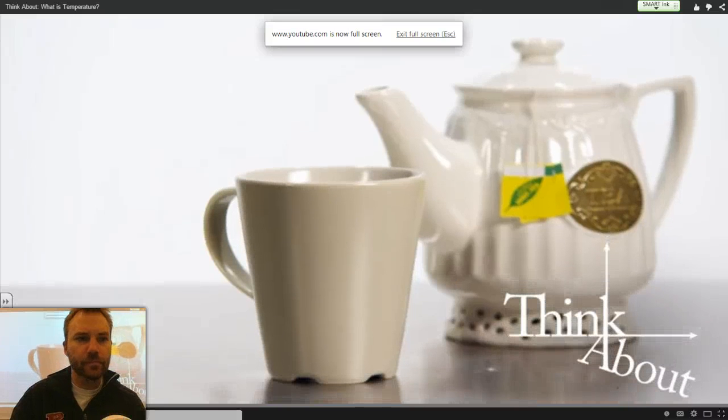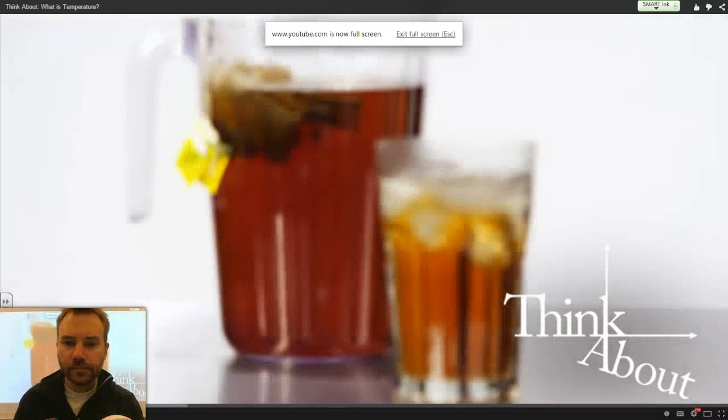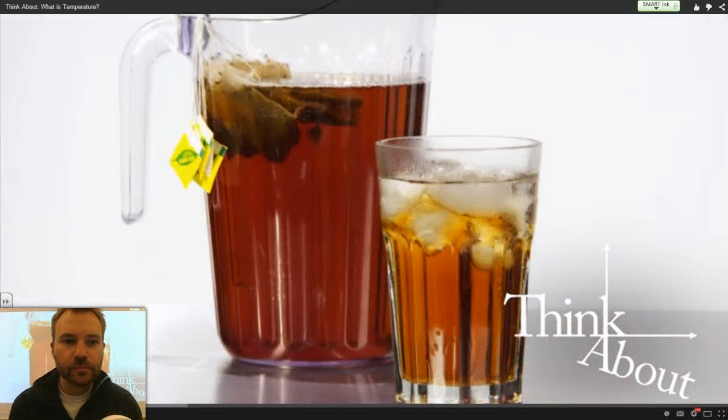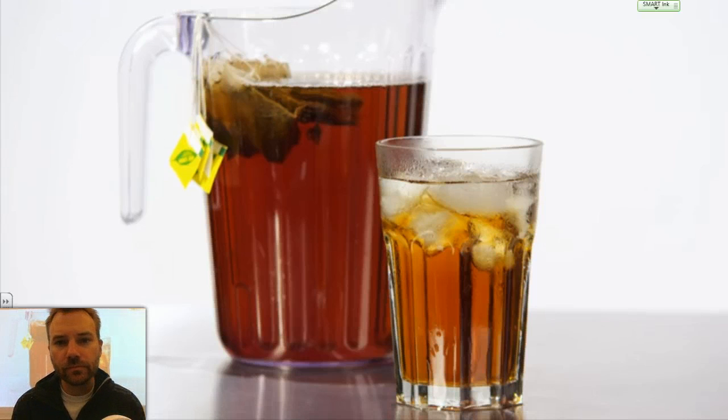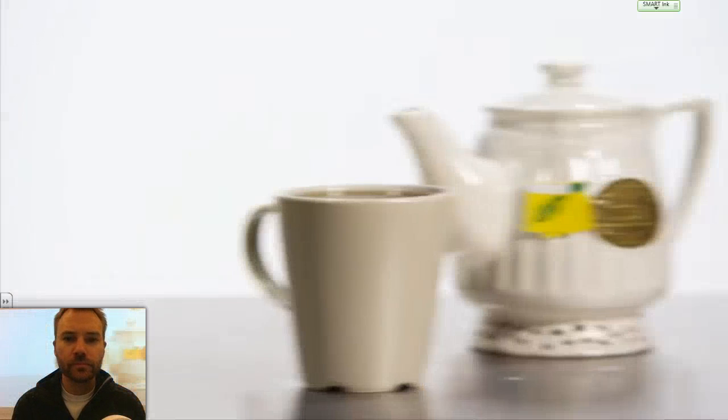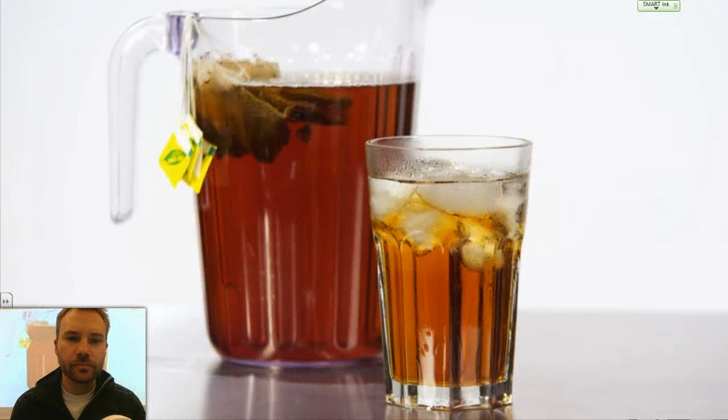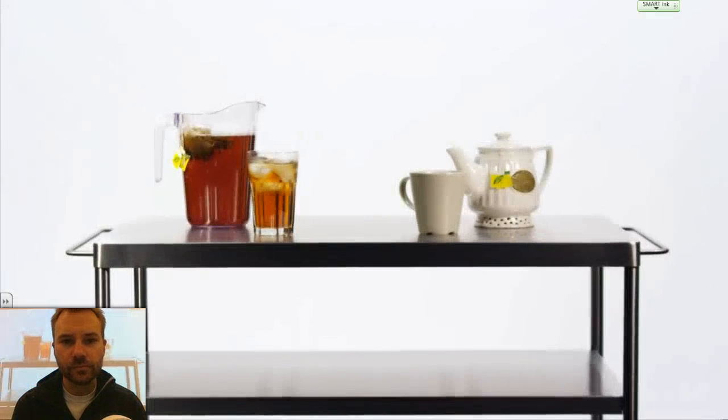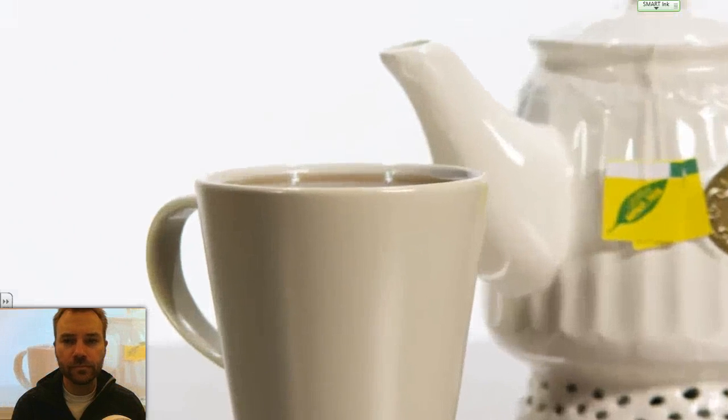Here's a nice cup of hot tea, and here's a glass of the same tea, except it's ice cold. So, what's the difference? Well, one is hot, and one is cold. In other words, they have a different temperature. To understand what temperature is, we need to imagine the tiny particles that the hot tea is made of.